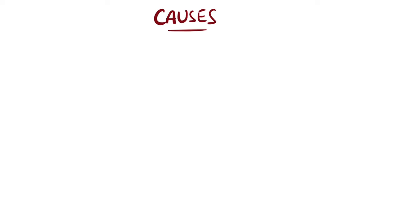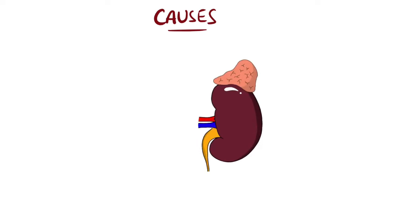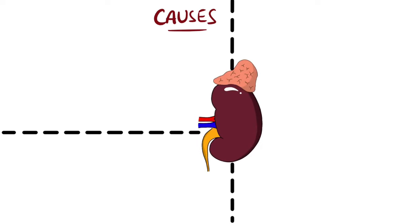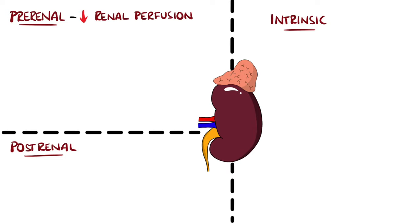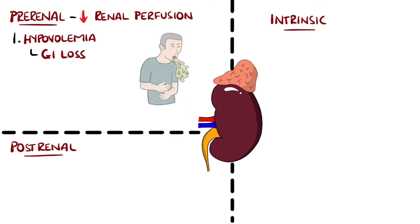The causes of acute kidney injury are broken down into three main types: pre-renal, intrinsic, and post-renal. Pre-renal causes are primarily involved with a reduction in blood perfusion to the kidney, such as during periods of hypovolemia, which could come from GI losses like vomiting or diarrhea, or even hemorrhages or burns.